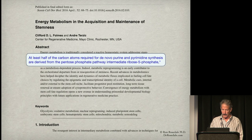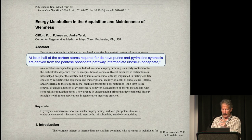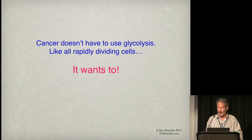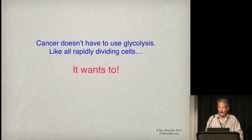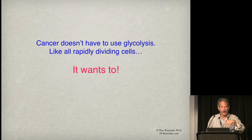At least half the carbon atoms required for nucleotide synthesis are derived from the pentose phosphate pathway intermediate ribose-5-phosphate — made in that little detour off of glycolysis. You can't make new genes, which means you can't make new cells, without ribose, which means you have to use glycolysis. This tells us that cancer doesn't have to use glycolysis because of mitochondrial damage. Cancer, like all rapidly dividing cells, wants to use it — it's purposely going out of its way to use glycolysis.